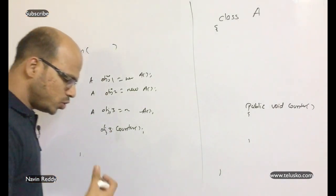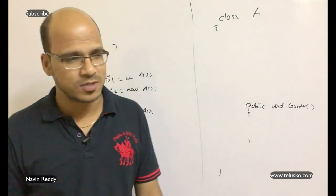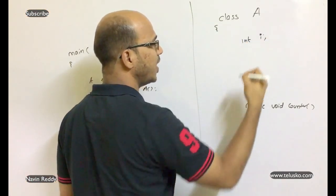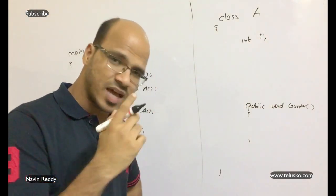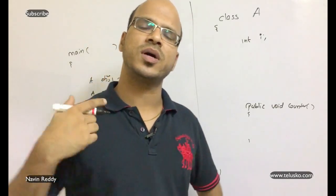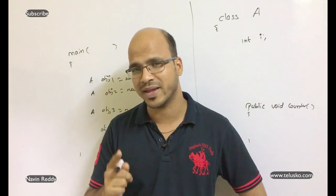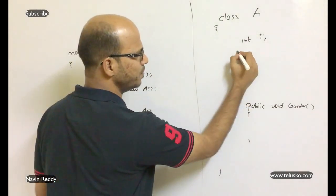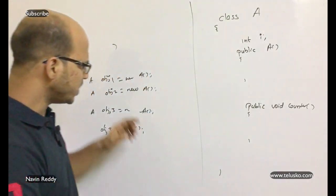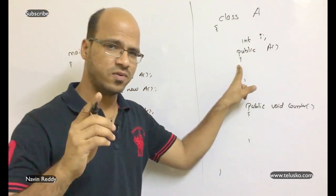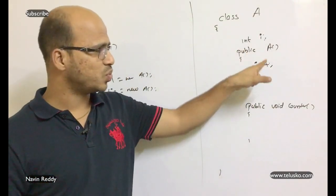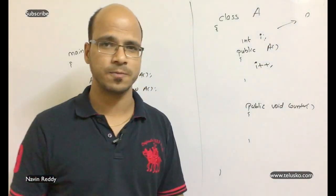So whenever we want to count, we need a variable to hold the count. Let's say I have a variable int i, responsible to count. But how would i know that you are creating an object? Well, every time you create an object, a constructor is called. So what if in this constructor we say i++? Every time you create an object it will increment this value, and the default value for i will be 0.